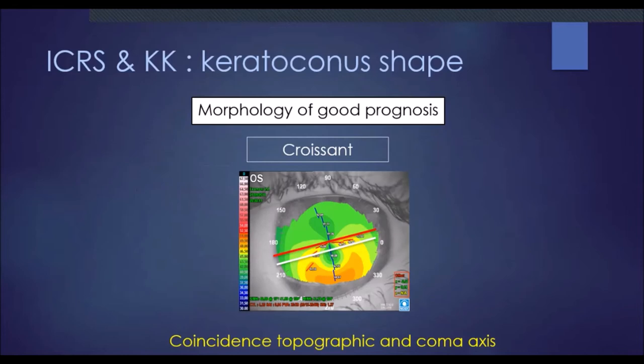Croissant shape is also considered a good prognosis morphology, because in this case of paracentral ectasia we have coincidence between the topographic and coma axis. So if we place one ring on the steepest axis, we correct both astigmatism and coma aberrations.